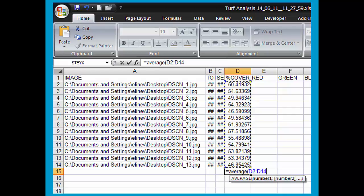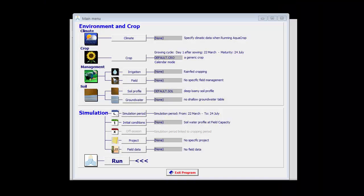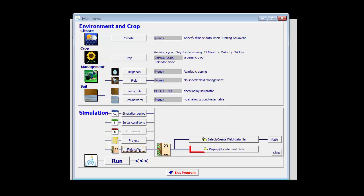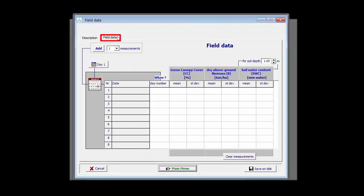Now this data is entered in AquaCrop to assess the canopy cover. Let me show you that in AquaCrop. Observed data used to evaluate simulations can be saved on disk by clicking here on the field data button. Here you can enter the field data.